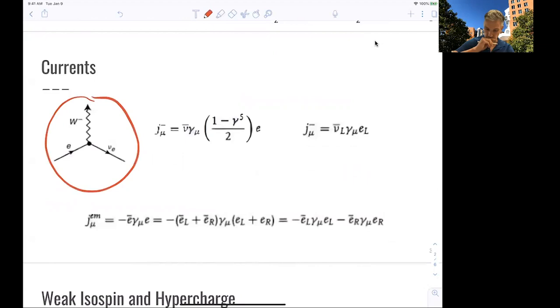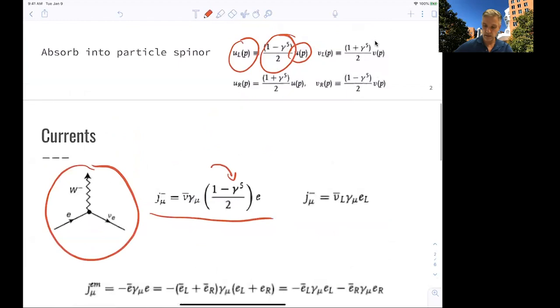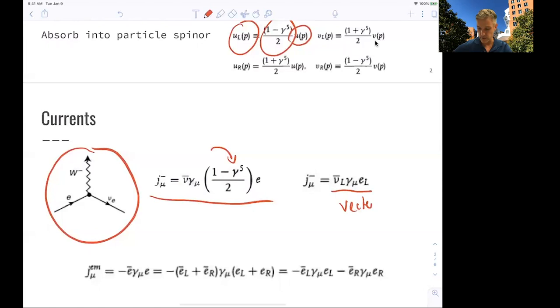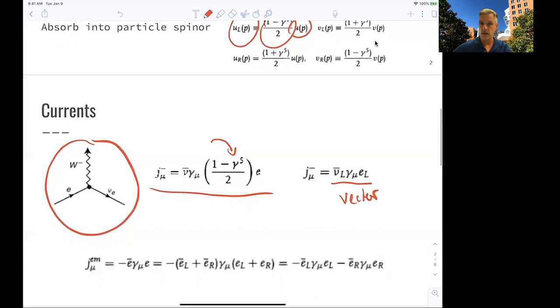Now we can look at the currents again. We look at this weak current, which can be written as our antineutrino here, gamma mu times 1 minus gamma 5 half times e. If we define our particles with gamma matrices, we find that this simplifies quite a bit, because the current can be simply written as a vector current. So we mitigated this quite nicely.